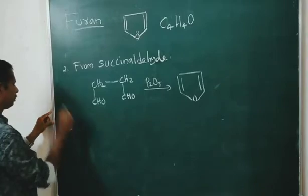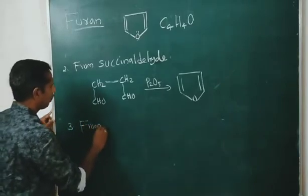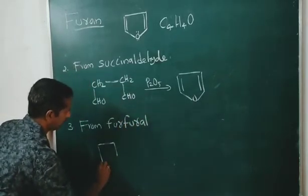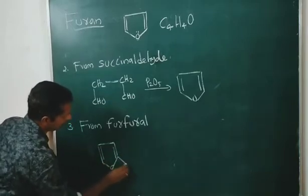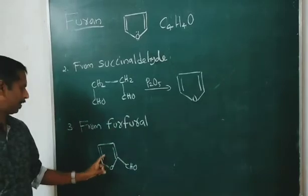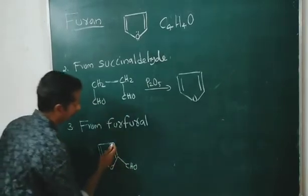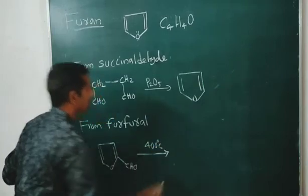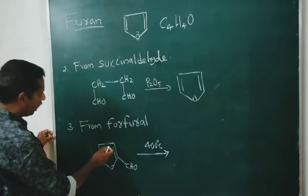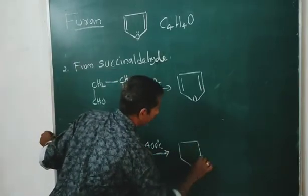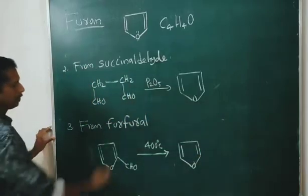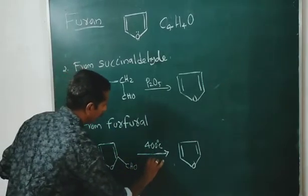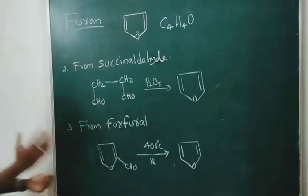Third method: from furfural. Furfural is the furan ring with a CHO group at the second position. When furfural is heated at 400 degrees Celsius in the presence of nickel catalyst, it is converted to furan. These are the methods of preparation of furan.